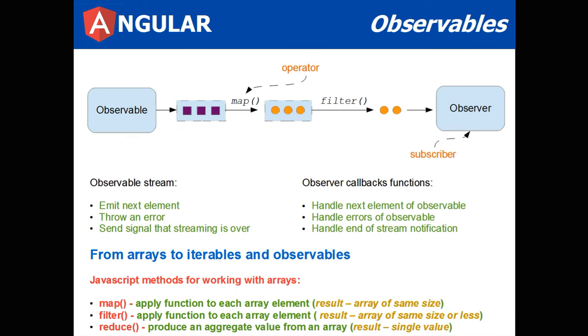As an observable is streaming data, we can perform operations on the data. We could filter the data, we could cancel a stream, and we can notify the observer that the stream is complete.